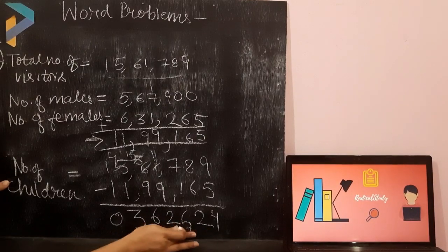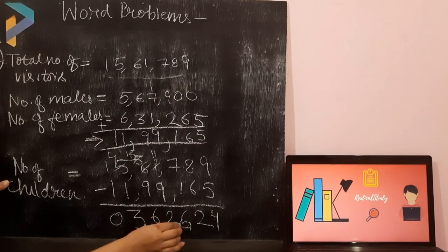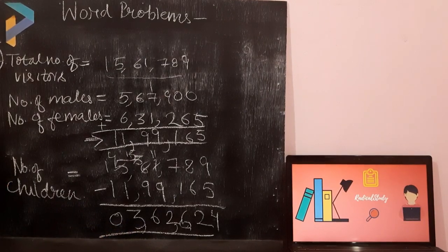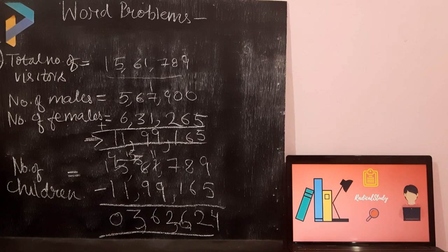So, the answer is 3,62,624. That means number of children were 3,62,624.